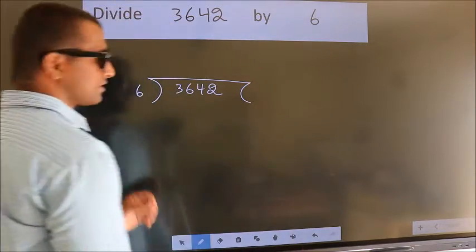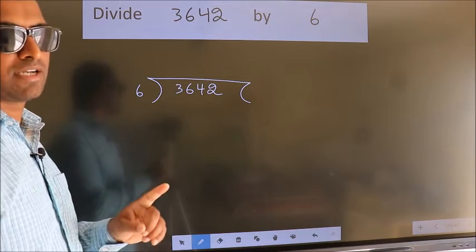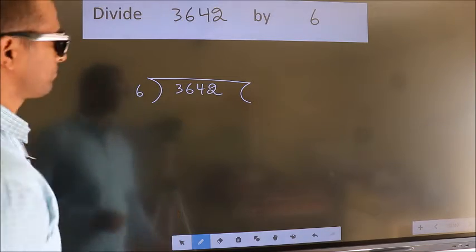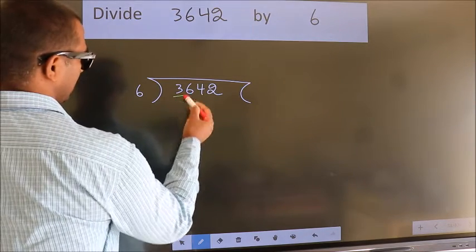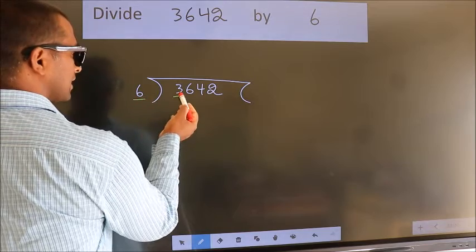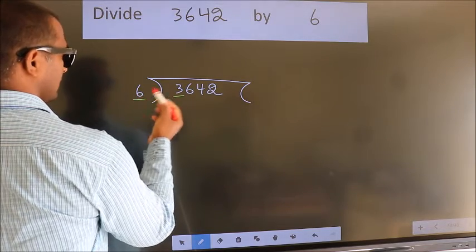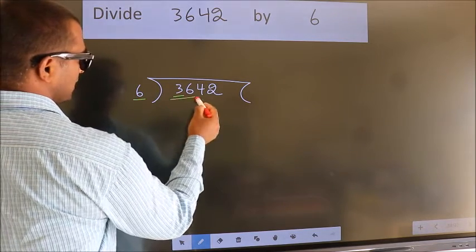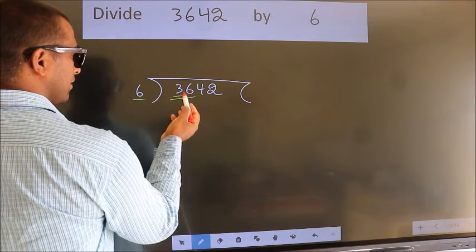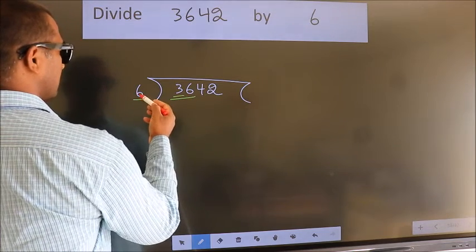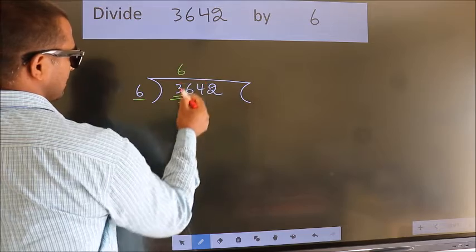This is your step 1. Next, here we have 3, here 6. 3 is smaller than 6, so we should take 2 numbers: 36. When do we get 36? In the 6 table, 6 times 6 is 36.